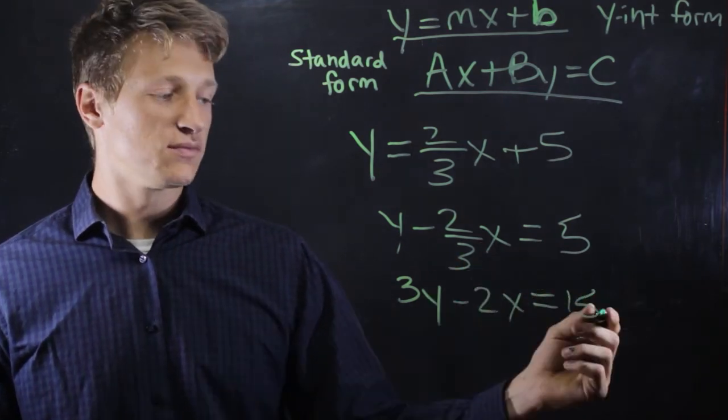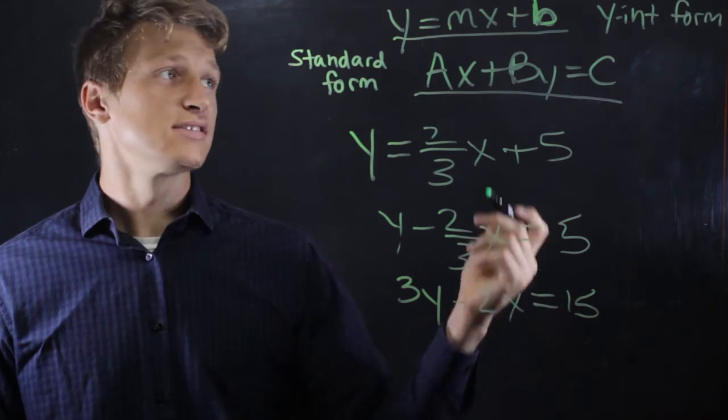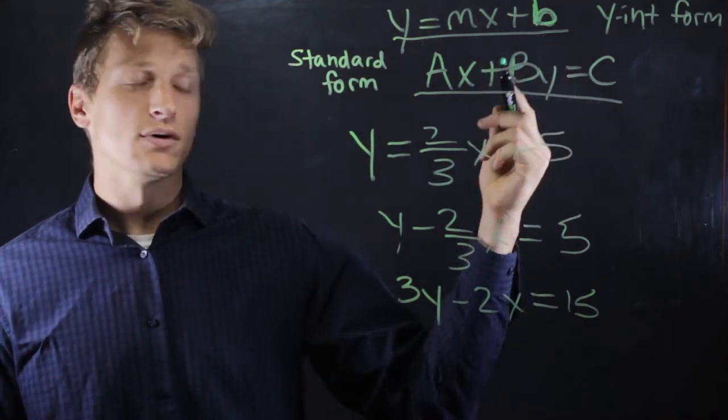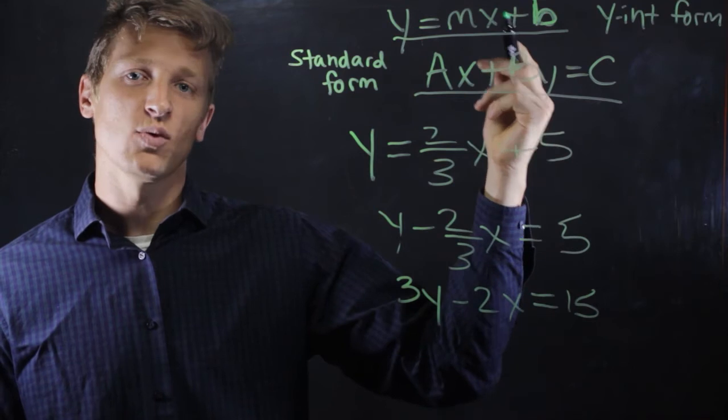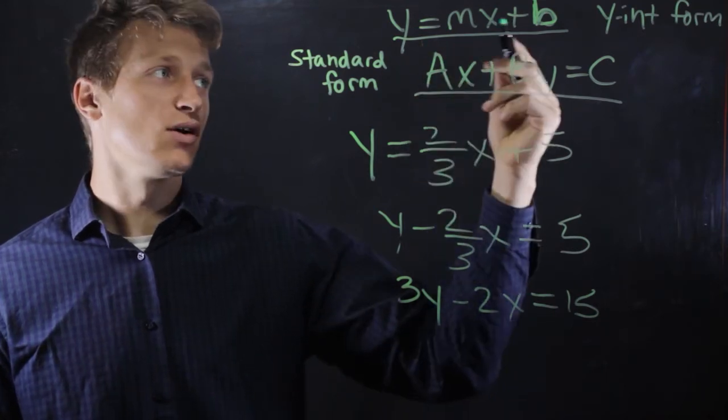And there you have it, standard form. So to summarize, to change from y-intercept form to standard form, we move the x and y to the left side, and we solve for the b.